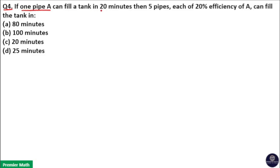If one pipe A can fill a tank in 20 minutes, then five pipes each of 20% efficiency of A can fill the tank in.